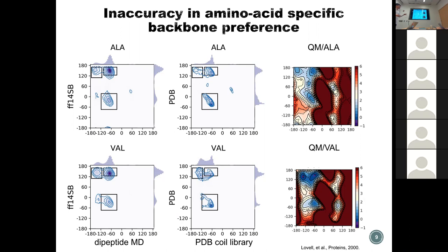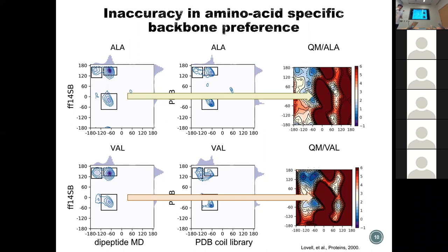We do this for all 20 amino acids and see a similar trend. That makes us think that maybe we should treat different amino acids differently using different quantum data — that might be a good strategy.